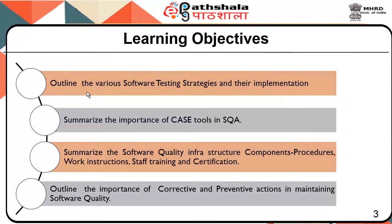Learning objectives: outline the various software testing strategies and their implementation. Summarize the importance of computer aided software engineering tools in software quality assurance. Summarize the software quality infrastructure components — procedures, work instructions, staff training and certification. Outline the importance of corrective and preventive actions in maintaining software quality.